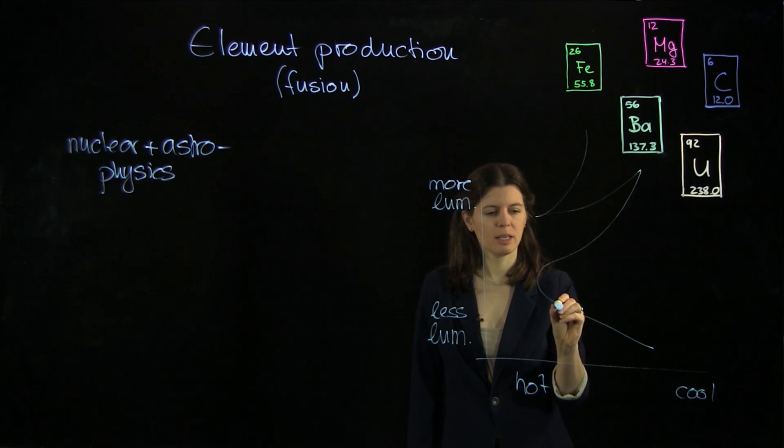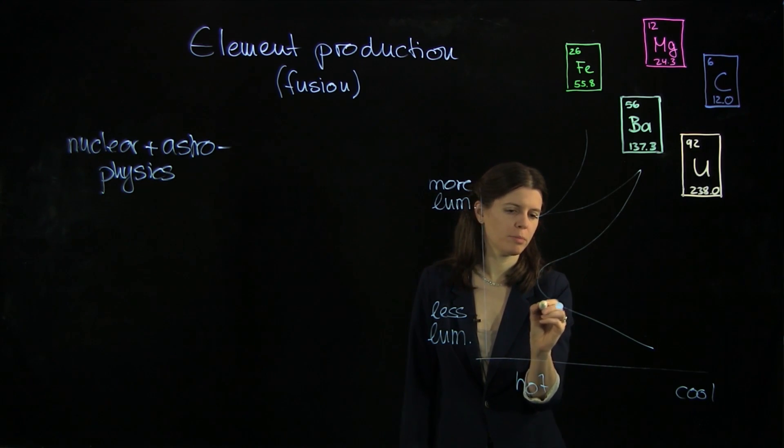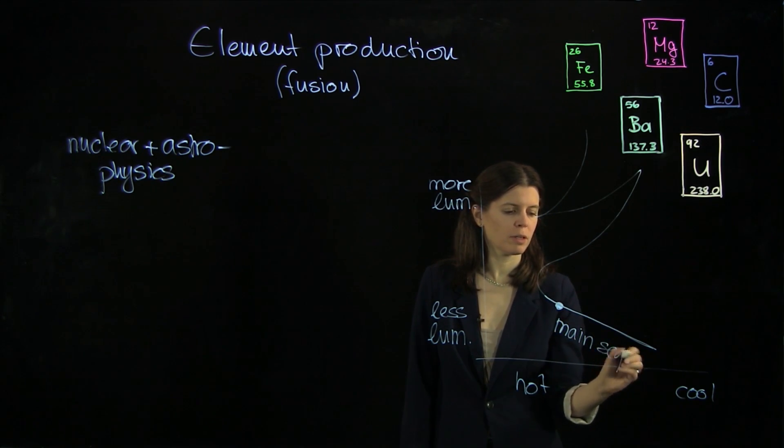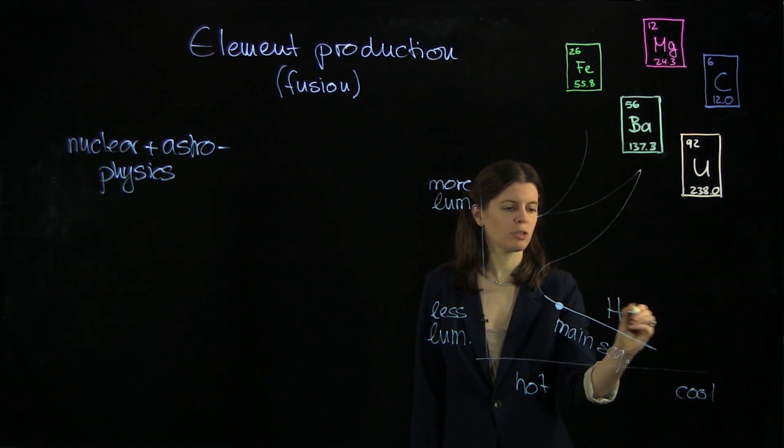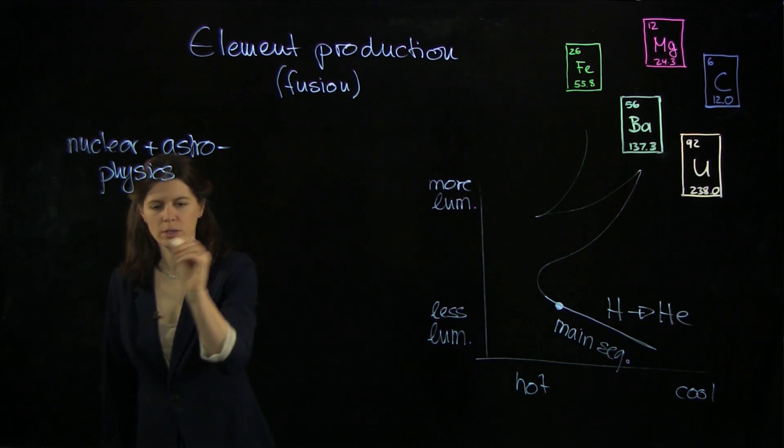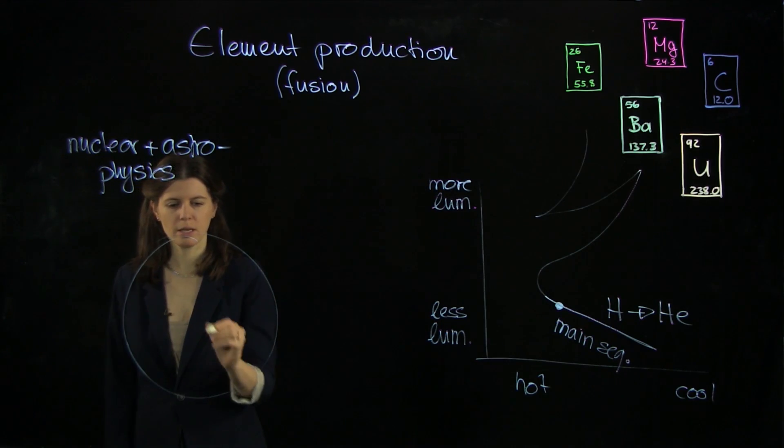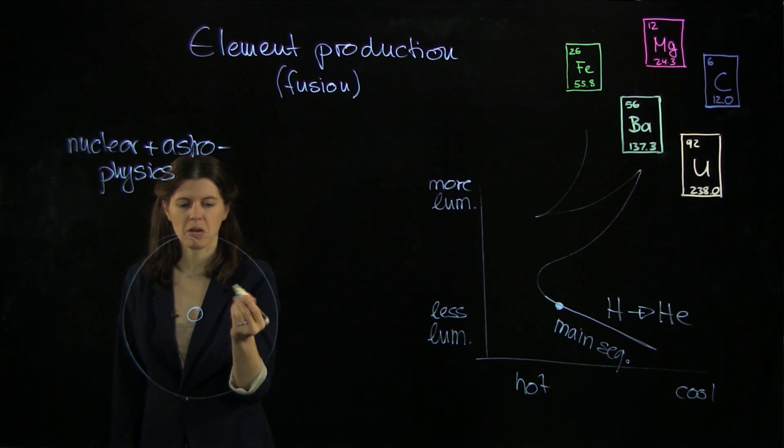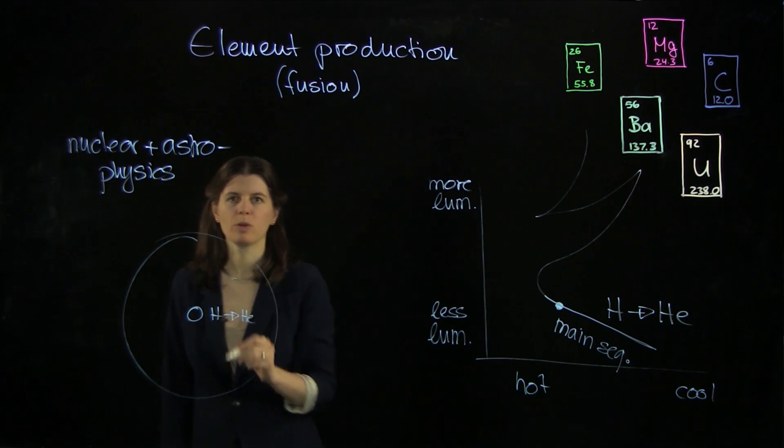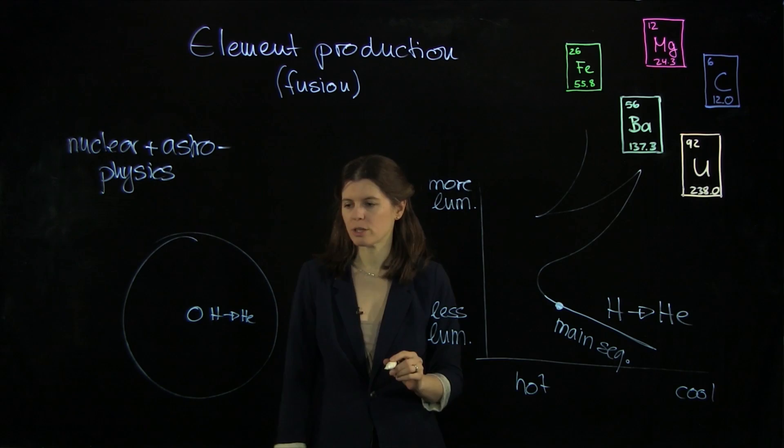So the sun is sitting here, and we know on this branch here, which we call the main sequence, that stars burn hydrogen to helium. How does this look? If we draw a star here, in the core hydrogen is burned into helium, just like what we had in the previous section.